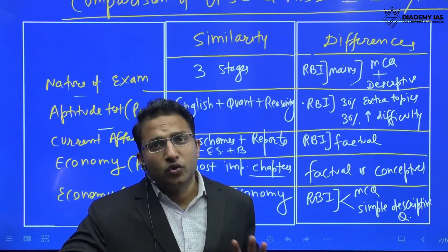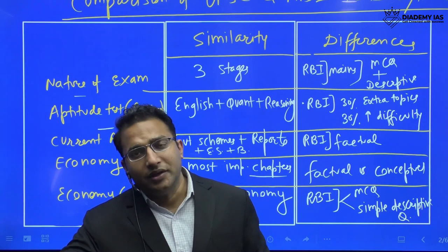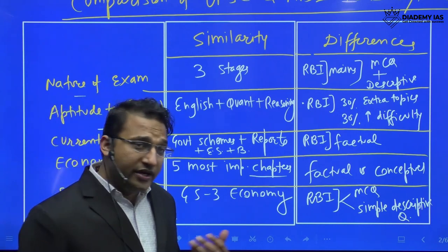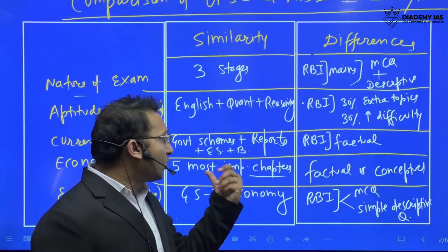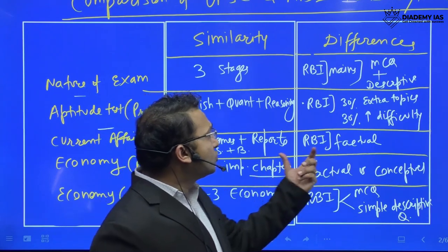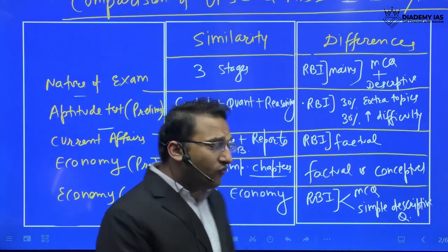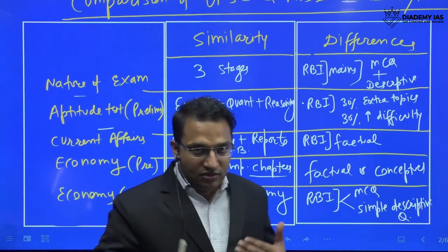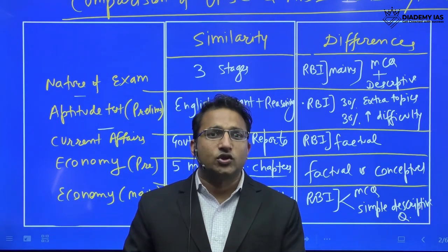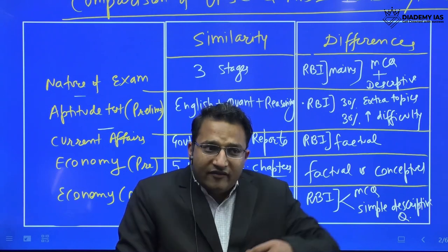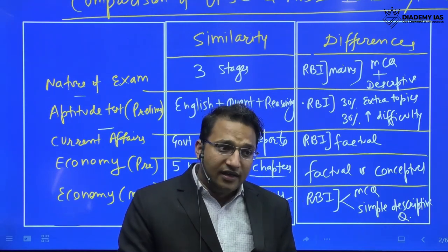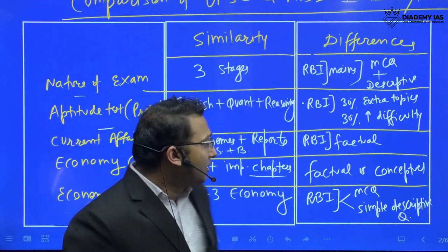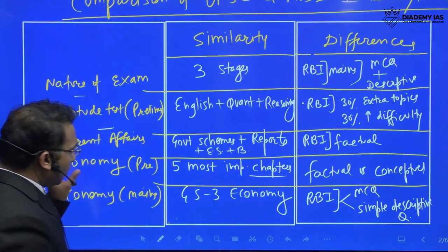For current affairs, in UPSC we already study government schemes, reports, economic survey, and budget. For RBI, you need to add more factual detail within these same areas — for example, from the economic survey, what has been the growth rate over the last three years, or from the budget, how much has been allocated to a particular scheme or government program.